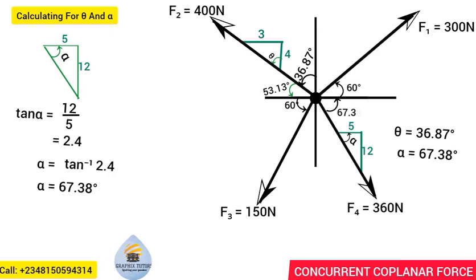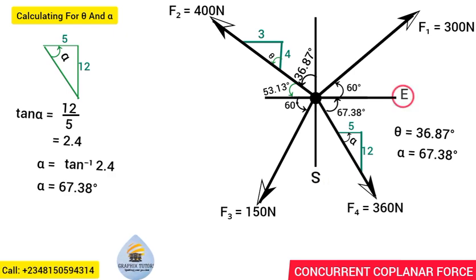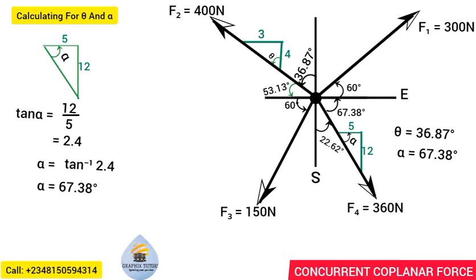Taking south and east as perpendicular references, the angle between them is 90 degrees. Subtracting 67.38 from 90 gives 22.62 degrees. So we have successfully found both alpha and theta.